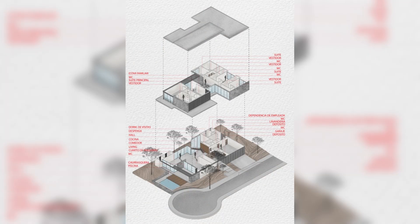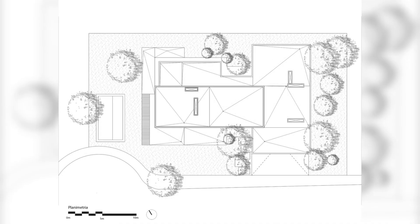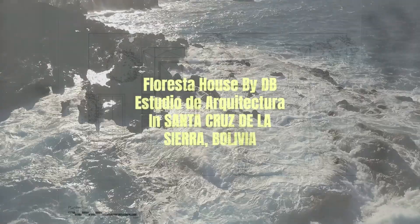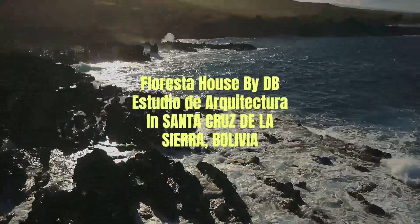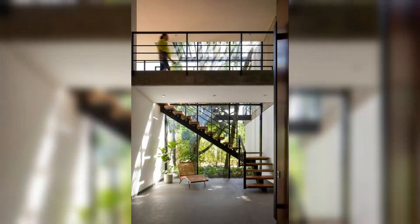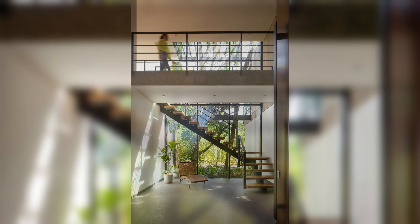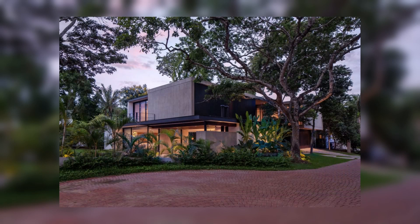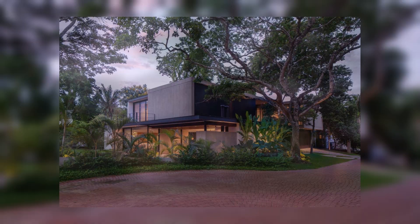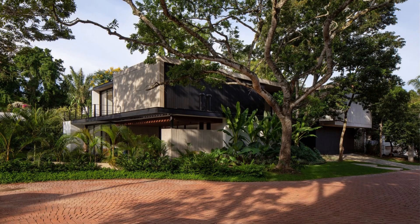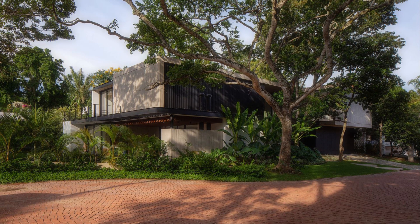Upon entering the house, we are greeted by a double-height space — a kind of glass box with diffuse exterior/interior limits — that becomes the main connecting element of the project, both horizontally dividing the social zone and the service zone, and vertically dividing the social area and the private area, where the stairs are found.